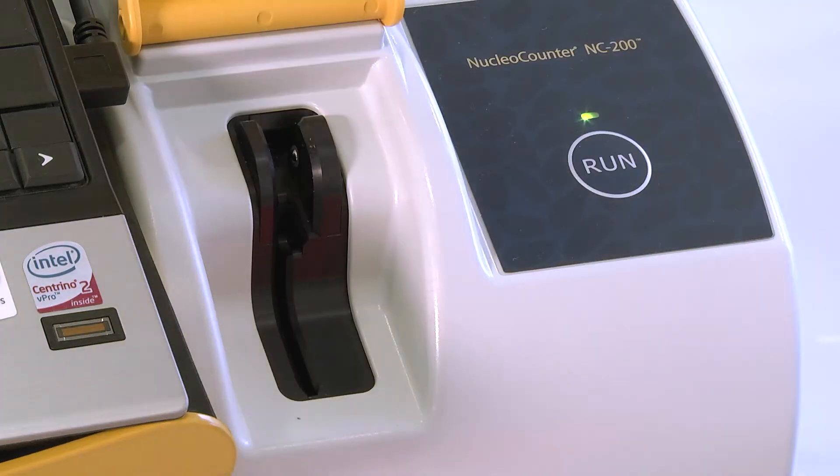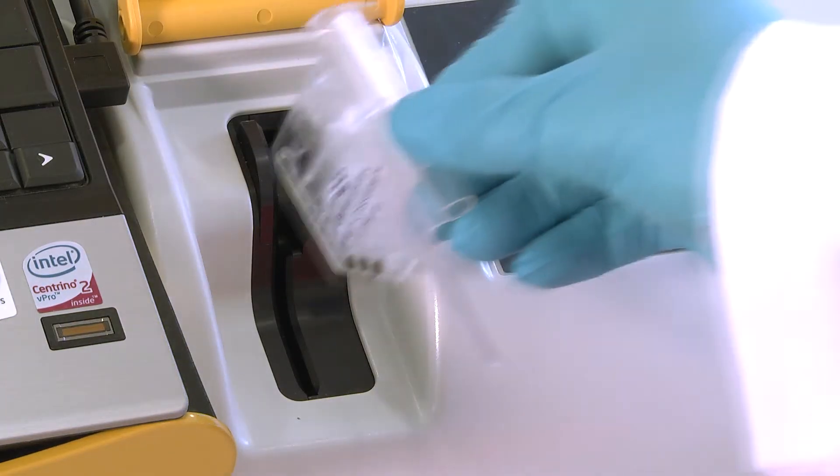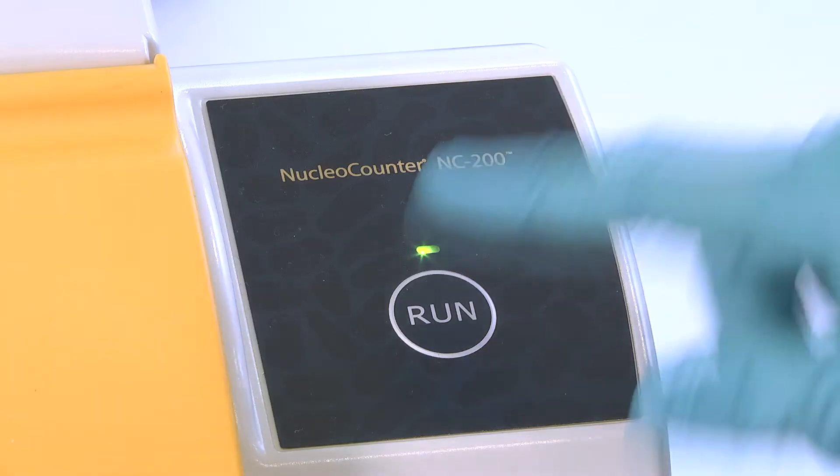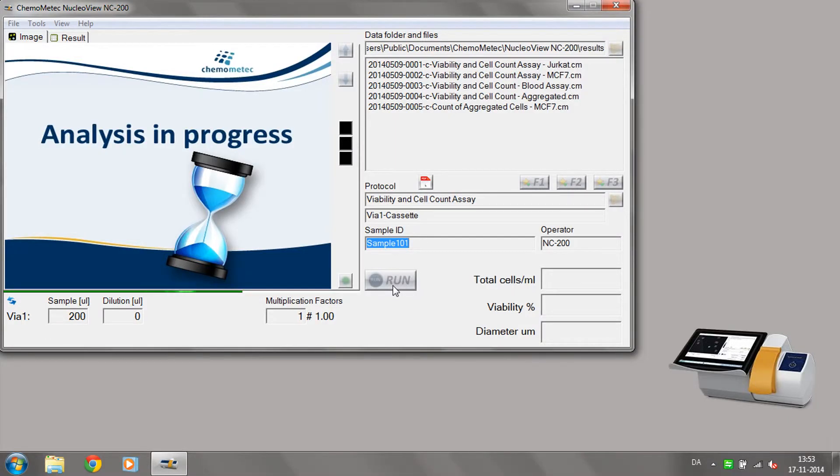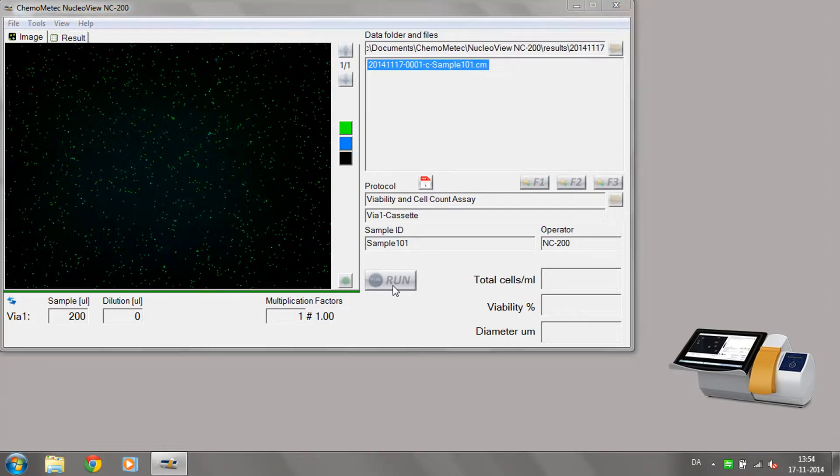The NC200 is 21 CFR Part 11 ready, and with the ability to perform IQ, OQ, PQ, and set your own viability thresholds, it is ideal for GMP environments.